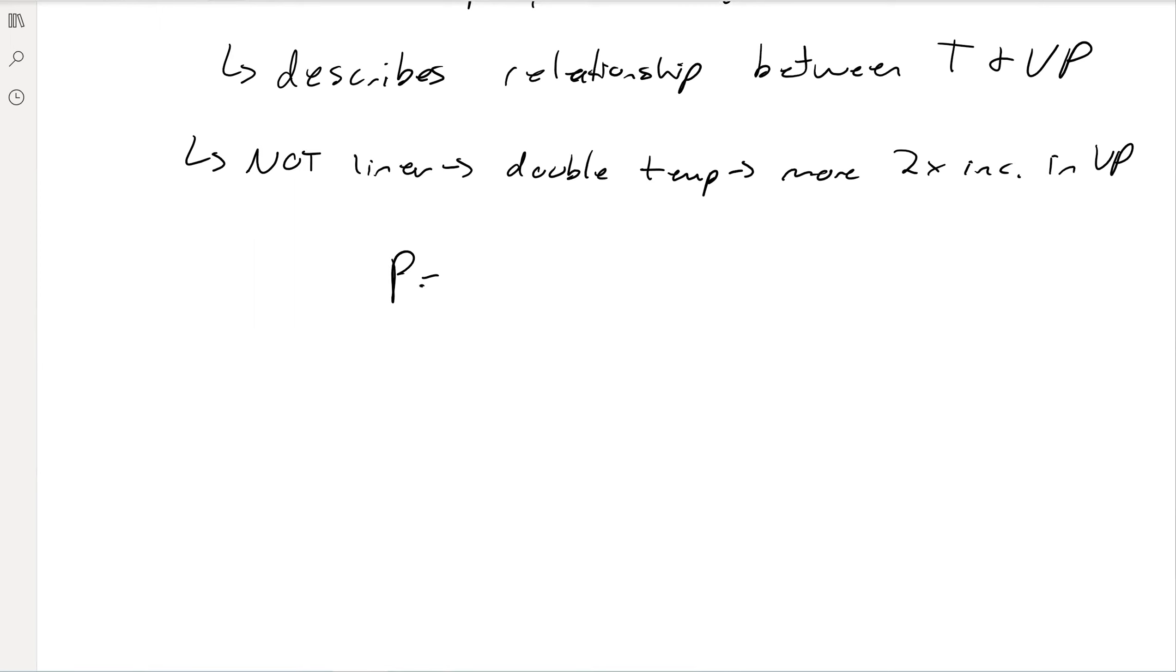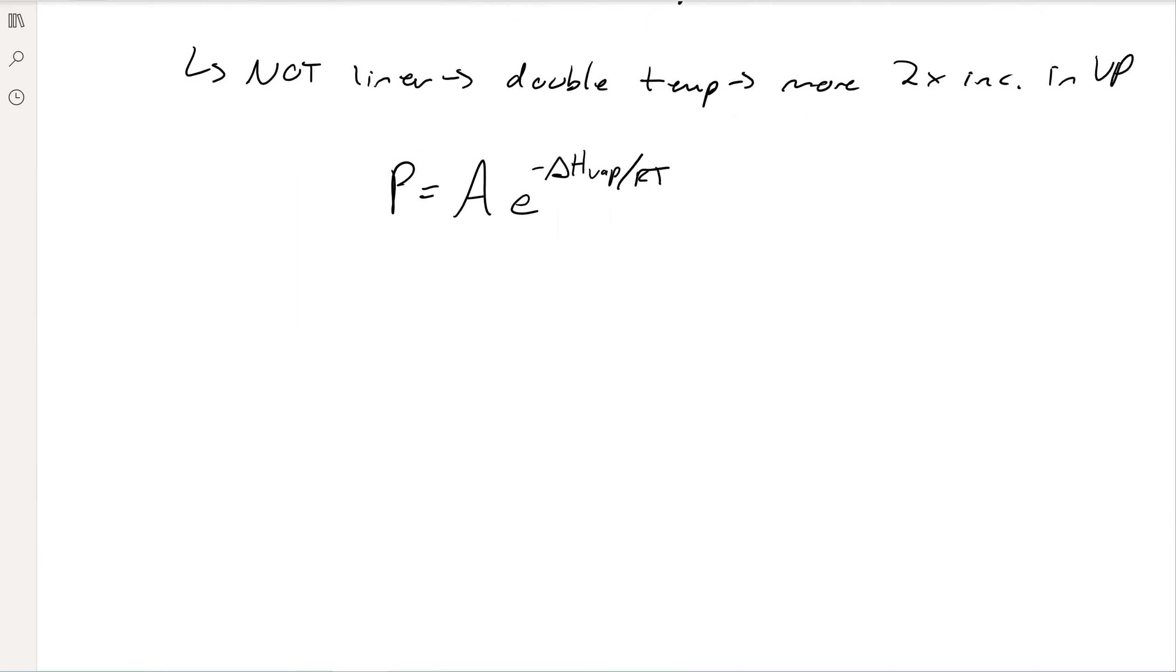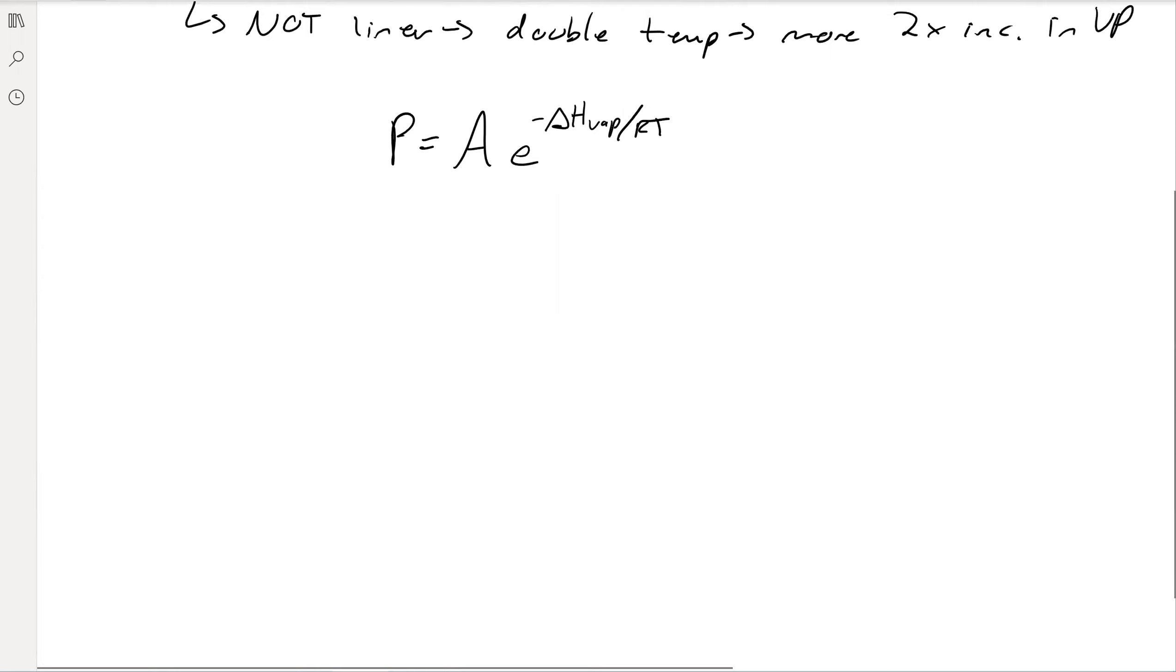The Clausius-Clapeyron says that pressure equals capital A, which is just a constant, E to the negative delta H of vaporization divided by RT. E is just a mathematical function. If you're not sure about what that is, find it on your calculator or ask your math teacher. That's one form of the equation.